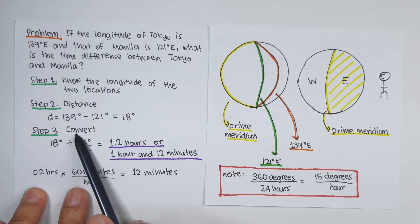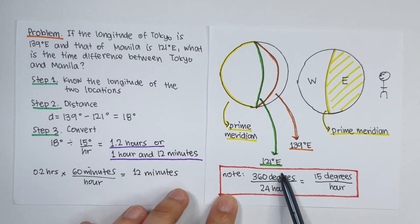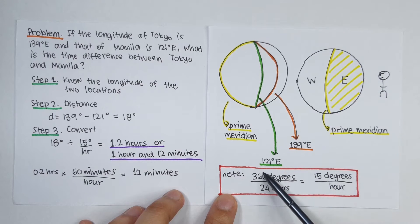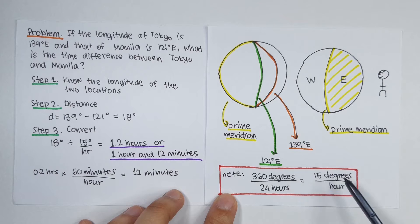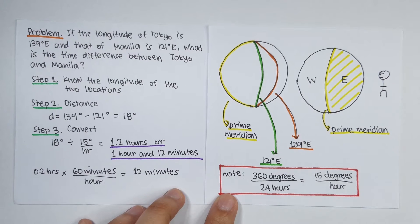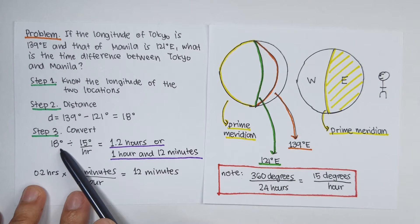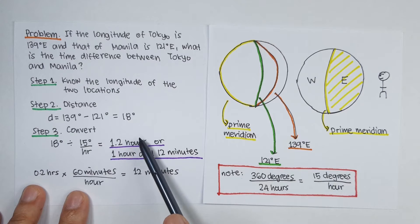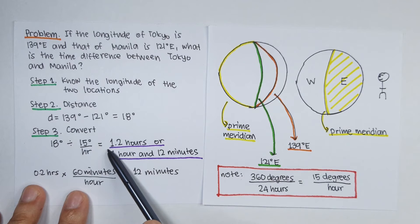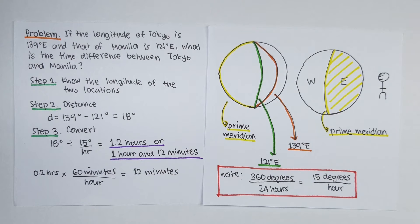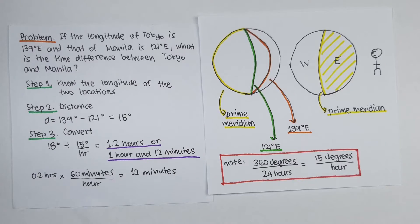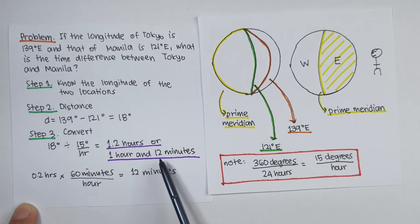Step number three is to convert. The Earth is 360 degrees and in a day we have 24 hours, so 360 divided by 24 is 15 degrees per hour. That means in every 15 degrees there is one hour of time difference. So 18 degrees divided by 15 degrees per hour equals 1.2 hours — meaning Tokyo and Manila have a time difference of 1 hour and 12 minutes. The 12 minutes comes from 0.2 hours times 60 minutes per hour, which equals 12 minutes. Hence, 1 hour and 12 minutes.